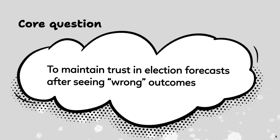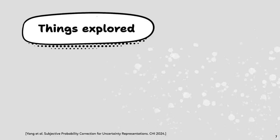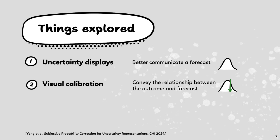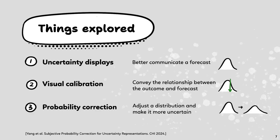All of this motivates our current research. Our goal is to find ways to maintain people's trust in election forecasts over time, especially after they see a wrong outcome. We explore three directions: better communicating probabilistic forecasts using different uncertainty representations, using annotations to visually show calibration between forecast and outcome, and applying a probability correction by adjusting the forecast distribution to compensate for people's biases in interpreting probabilities.